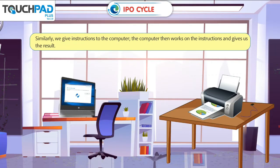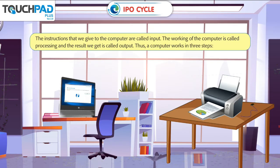Similarly, we give instructions to the computer. The computer then works on the instructions and gives us the result. The instructions that we give to the computer are called input. The working of the computer is called processing, and the result we get is called output. Thus, a computer works in three steps.